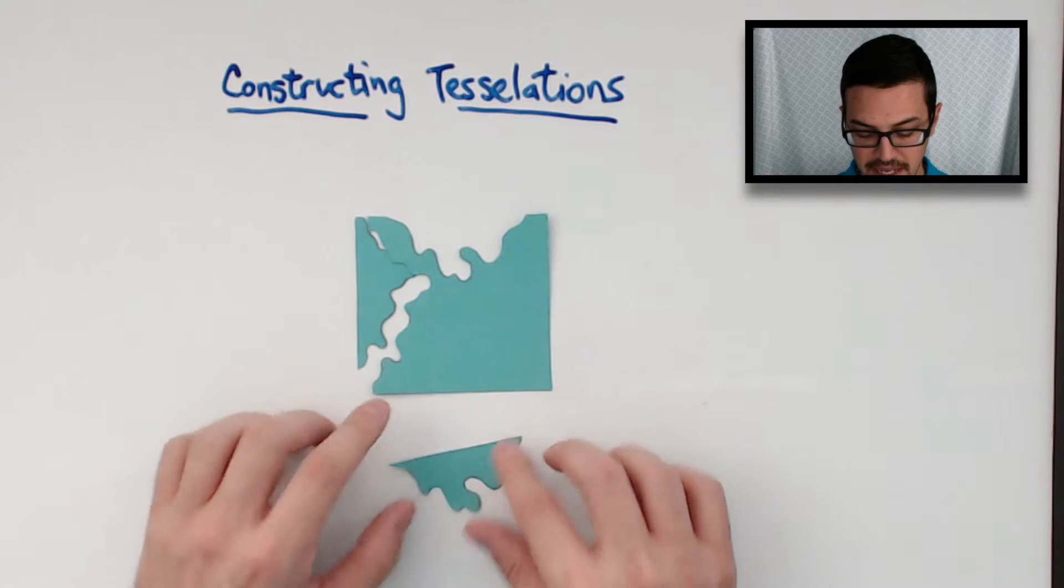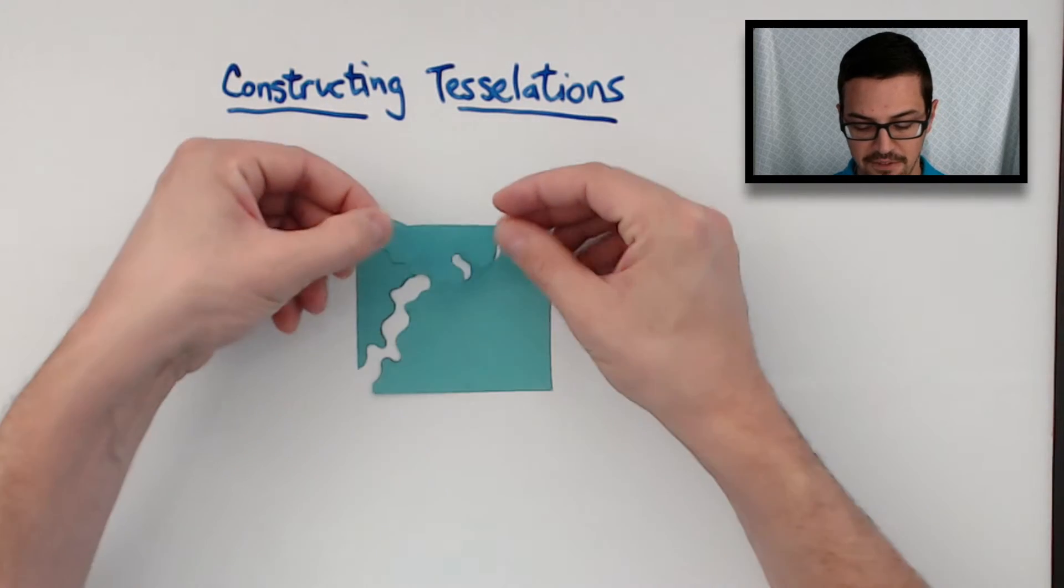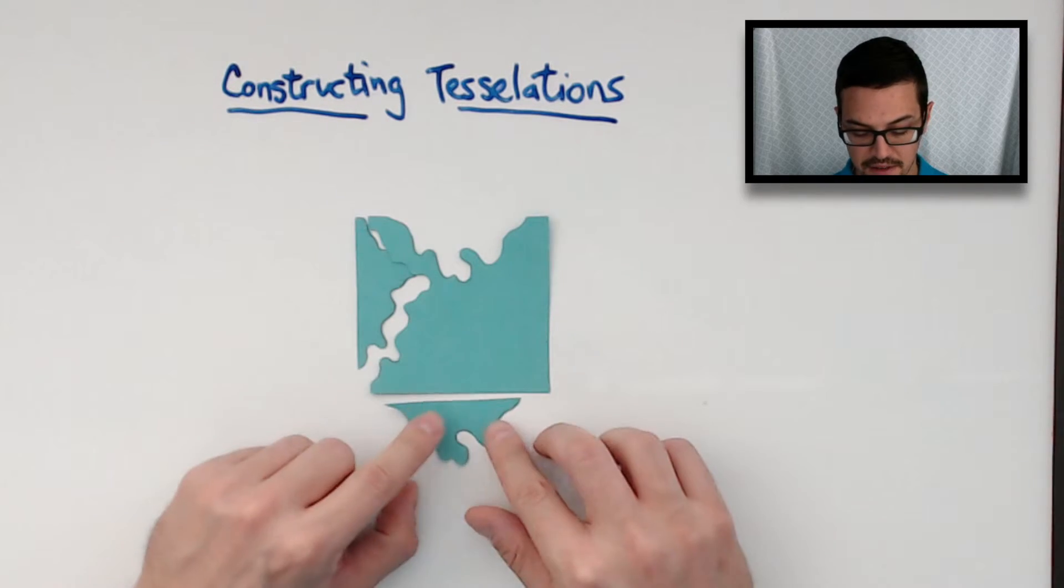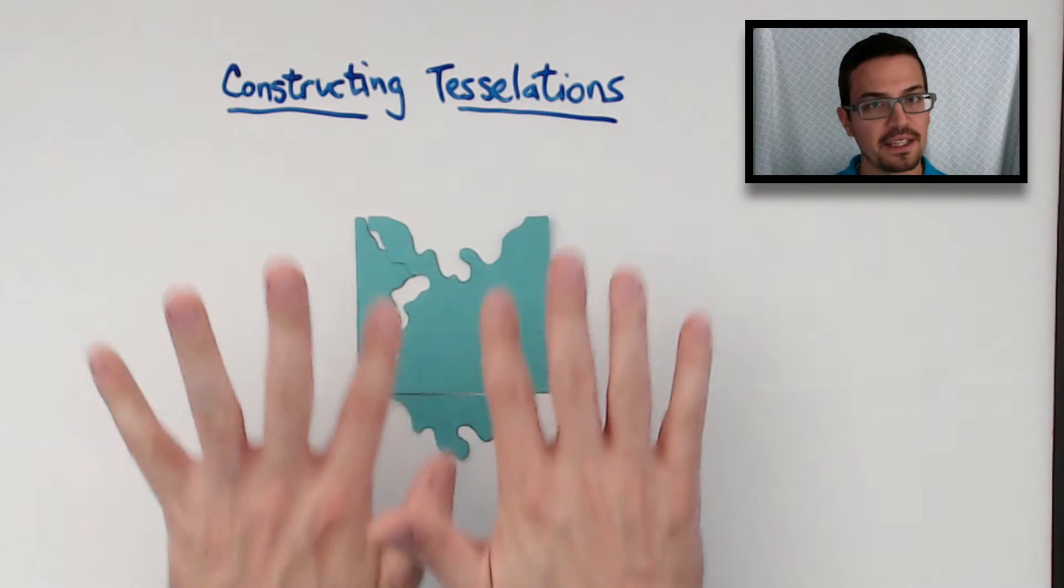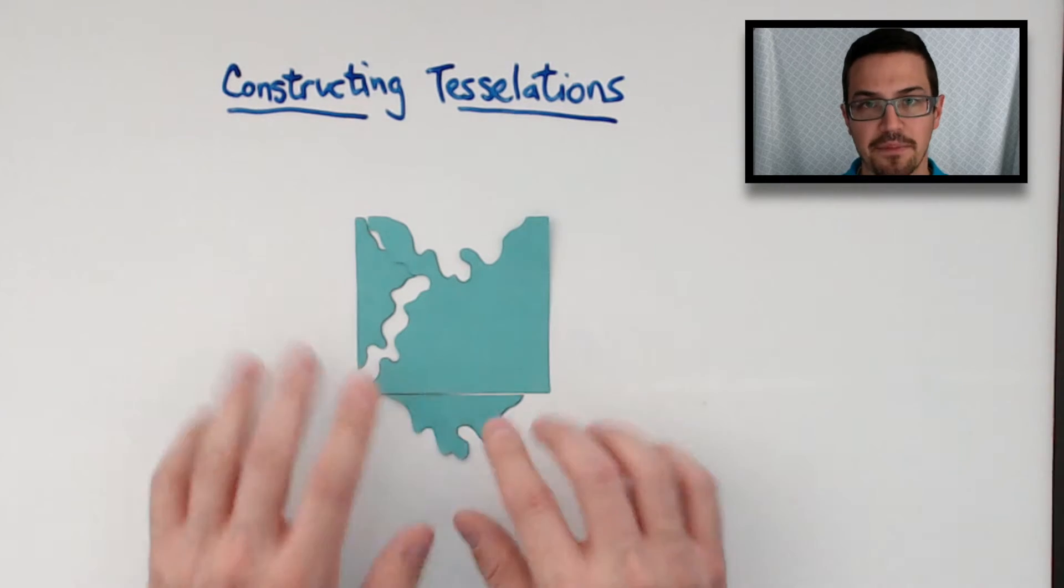An important consideration to know is you're basically just translating it. You're sliding it from here to here. And you want it to be as perfectly slid down as possible. So, I'm going to tape this really quick.